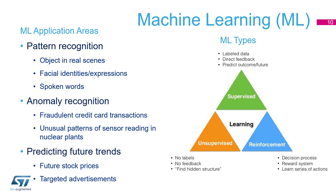For anomaly recognition: you have some machine and then someone is trying to tamper with it — you can recognize that. Banks are doing this and other similar things. And also pattern recognition — trying to spot words, facial identity, and so on. That's the key.